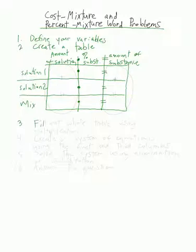Step three: fill out the whole table using multiplication. Once you get the first two boxes in a row — for example the amount of solution and the percent — you multiply them to get the third. You do this for all three rows.